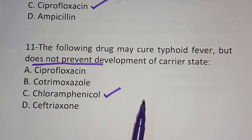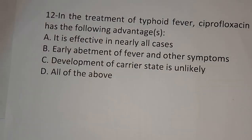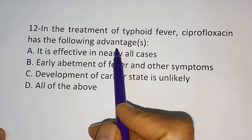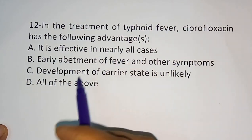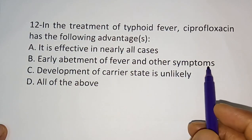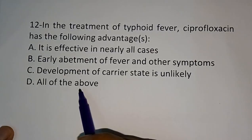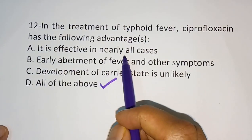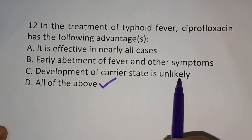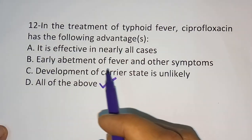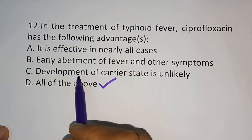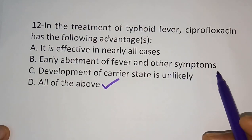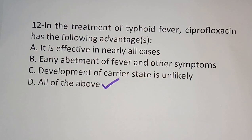Question twelve: in the treatment of typhoid fever, ciprofloxacin has the following advantages — option A: it is effective in nearly all cases; option B: early abatement of fever and other symptoms; option C: development of carrier state is unlikely; option D: all of the above. The correct answer is all of the above.